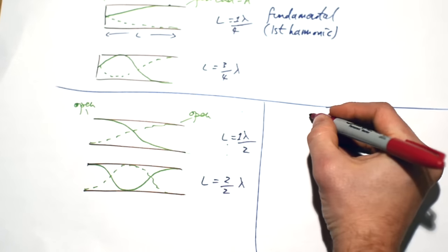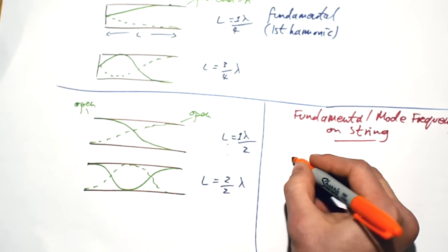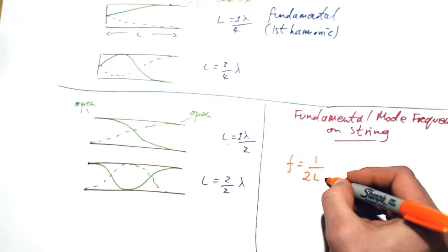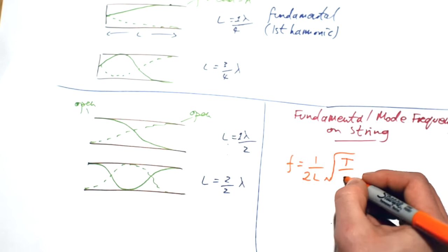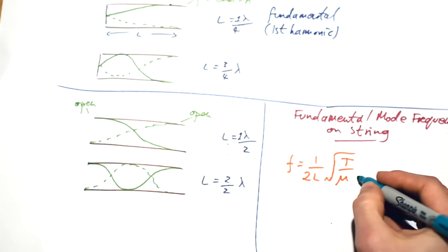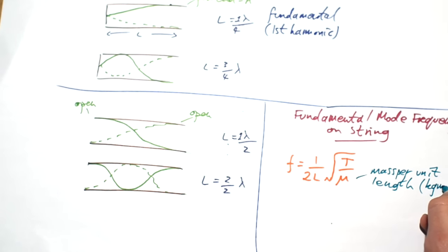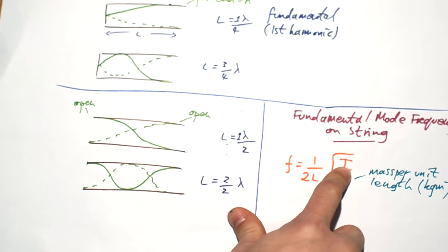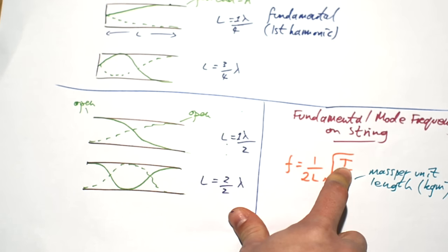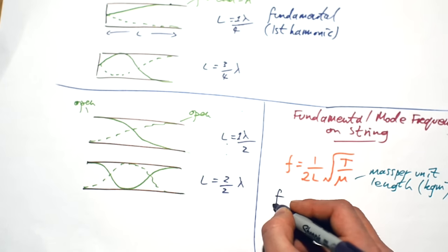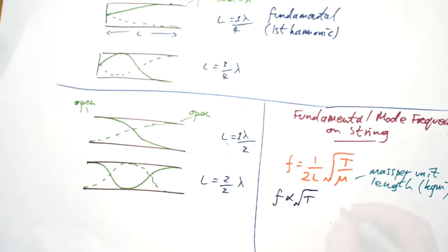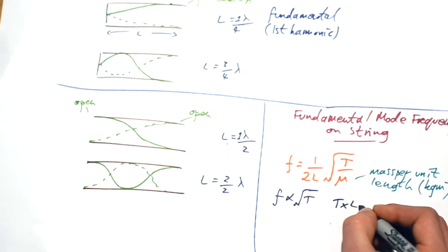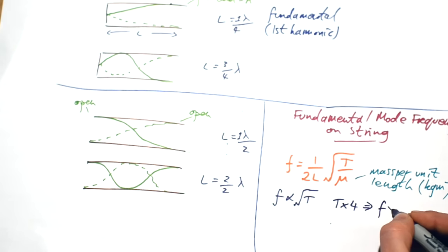Going back to our string, we can calculate the frequency of the fundamental mode using the formula: f = (1/2L) × √(T/μ), where T is the tension in the string and μ is the mass per unit length in kilograms per metre. You can measure μ by taking one metre of string and weighing it. If the string hangs over a pulley, the tension equals the weight hanging on the end. Note the proportionality: f is proportional to √T, so multiplying the tension by four will double the frequency.